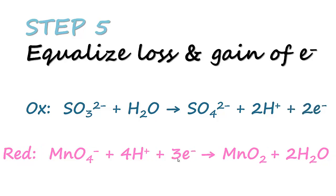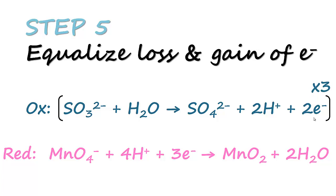Step 5 is to equalize the loss and gain of electrons. The oxidation equation has 2 electrons and the reduction equation has 3 electrons. We equalize by finding the common denominator — multiplying the oxidation equation by 3 to give 6 electrons, and the reduction equation by 2, also giving 6 electrons. This multiplication is applied across the entire equation.